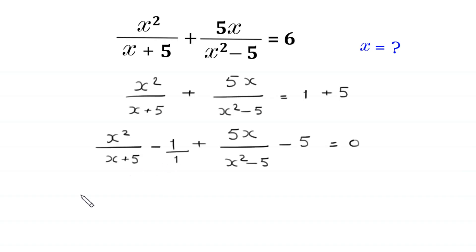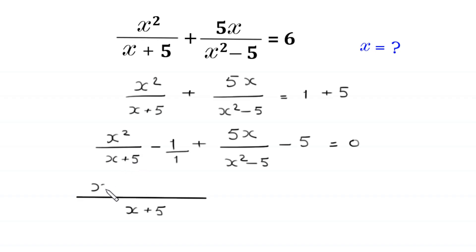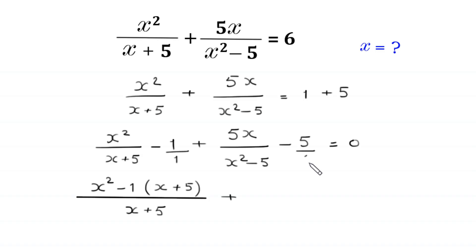Now we can write the denominator of this 1 as 1, and we take the LCM of 1 and x plus 5. The LCM of 1 and x plus 5 is x plus 5. So x plus 5 divided by x plus 5 gives 1; 1 times x squared is x squared, and x plus 5 divided by 1 is x plus 5. So we multiply negative 1 by x plus 5.